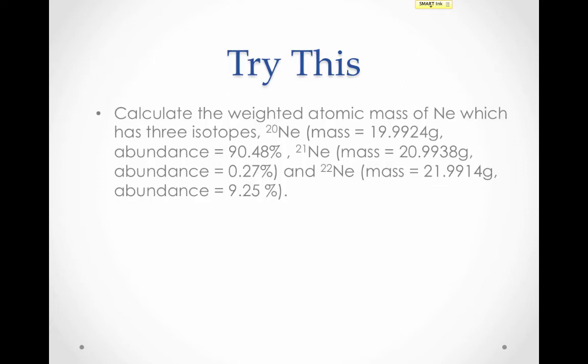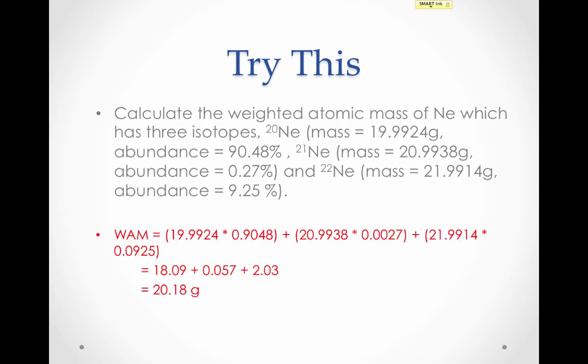Here's one to try on your own. Pause the video here and work through this problem. Notice that we have three isotopes, so you'll need to add together three mass times abundance values to get your weighted atomic mass. Welcome back. Here's what you should have gotten. Notice I've chosen to use grams in this problem, so we're dealing with a mole of neon atoms. Also notice that this answer makes sense — given that 90% of our sample is neon-20, our answer should be closest to 20.